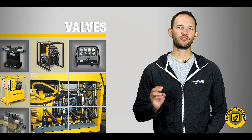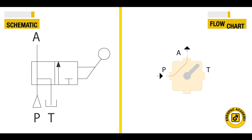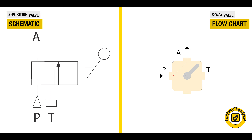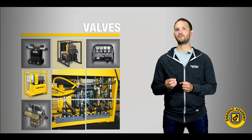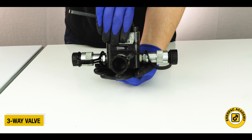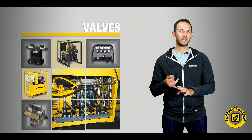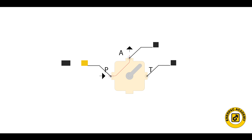When discussing directional control valves, you will hear the terms ways and number of positions. The number of ways on a valve refers to the number of unique flow paths into or out of the valve. A simple understanding of this is to think of ways as ports. If the valve is a three-way valve, it will have three major ports: the P or pressure port, the T or tank port, and the A port.